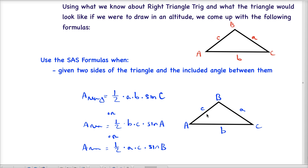If I'm given sides b and c and the included angle a, I would use this formula. If I'm given sides a and c and the included angle b, I would use this formula here. So whenever I'm given two sides of a triangle and the included angle between them, I would use one of these formulas depending on which two sides and which angle it was.